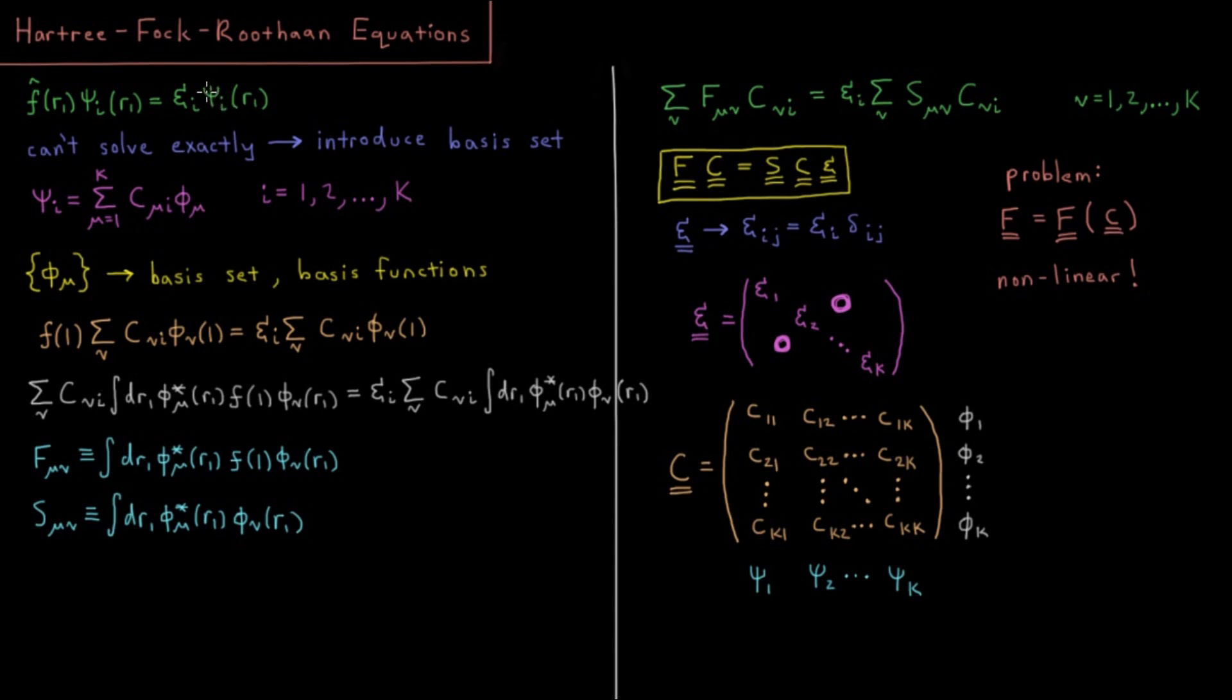Whenever we have all of our spatial orbitals being eigenfunctions of the Fock operator, then we have their exact orbital energies and we can calculate the total determinant energy and life is great. There's only one problem with this: we still can't solve exactly all of these canonical Hartree-Fock equations. It's because it's an integral differential equation, it's multidimensional, it's non-separable, it still has all these kinds of problems.